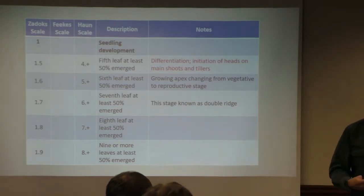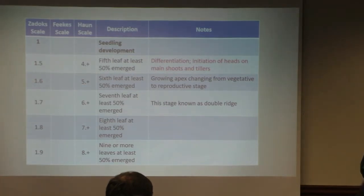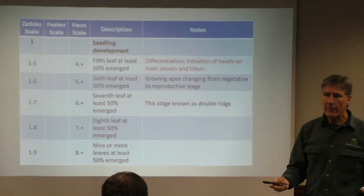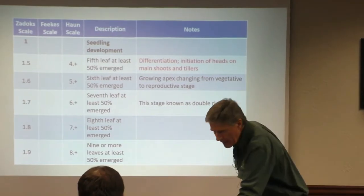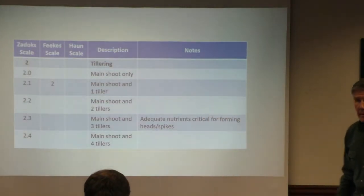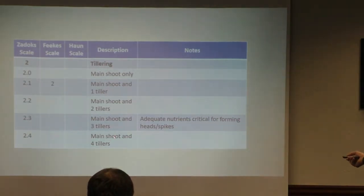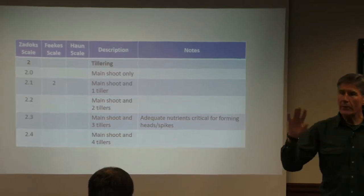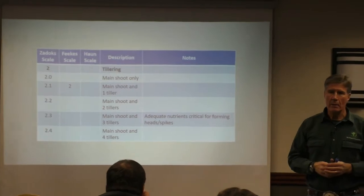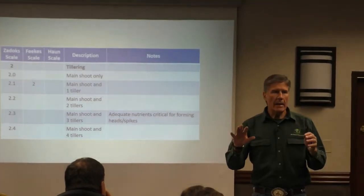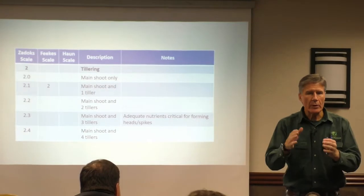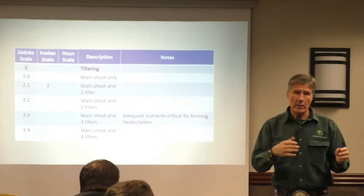All of this is in embryonic state — very, very tiny. As this plant starts to put things together, at every stage something very critical is happening, and it's relating because of a mineral, or not because a mineral is not there. When we start tillering, adequate nutrition is incredibly critical for forming heads and spikelets. The wonderful thing about wheat is that a lot of plants we have to grow and progressively add yield, but cereal grains are not that way.